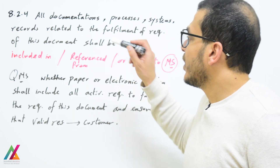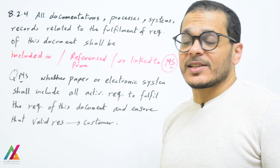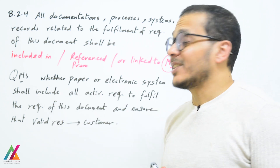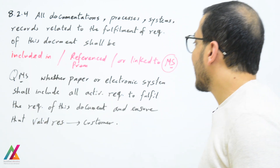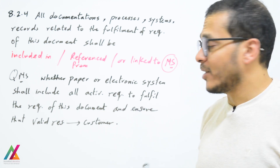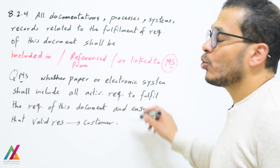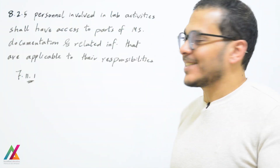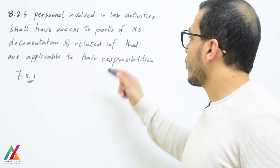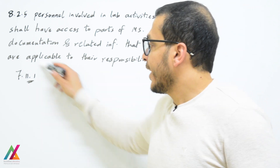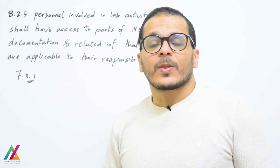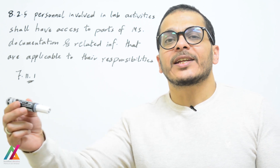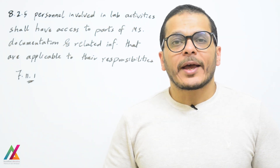All documentation inside the lab — processes, procedures, forms, and records — shall be included in or referenced from the management system, similar to how supporting procedures were previously referenced from the quality manual. The quality management system, whether paper-based or electronic, shall include all activities required to fulfill the requirements of this document and to ensure valid results are provided to customers. All personnel involved in lab activities shall have access to the parts of the management system documentation applicable to their responsibilities.